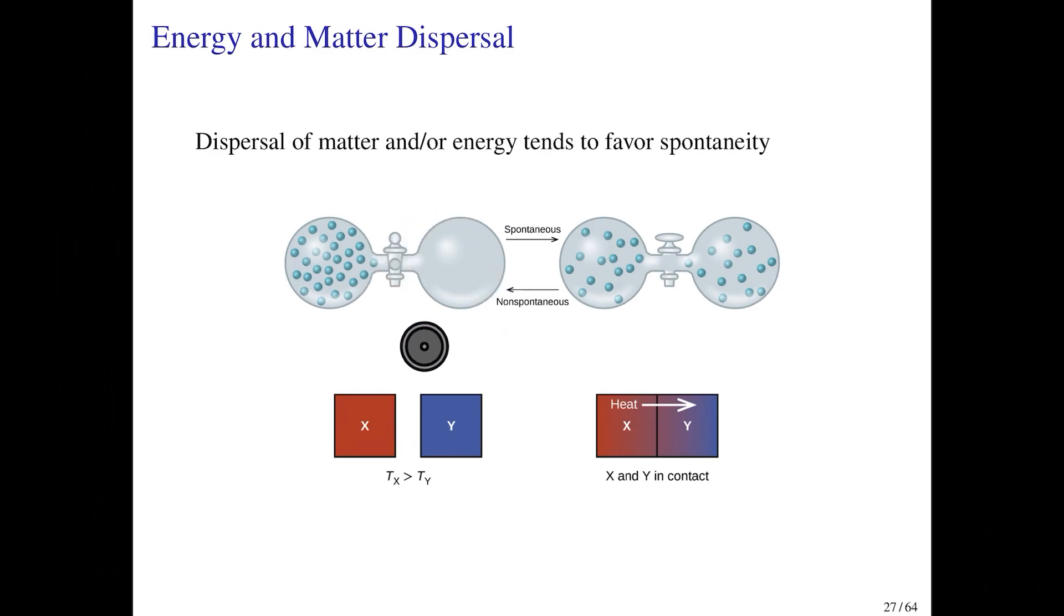So here we have a glass vessel that contains gas on one side, and on the other side we have a vacuum. If you open the valve between the two sides of the vessel, spontaneously, without having to do anything at all, the gas is going to expand to fill both sides of the vessel. You would never ever expect that if you were in this situation, the gas would suddenly move over to the other side on its own. In order to go from this state to that state, you would have to employ some sort of pump.